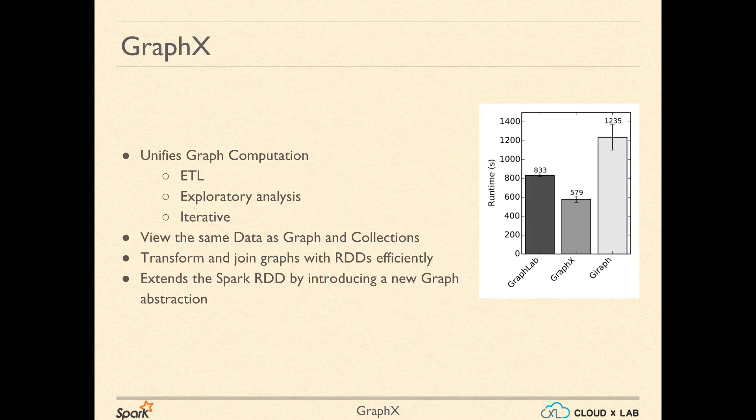The GraphX package of Spark unifies the ETL, extract, transform and load functionality of data into graph structure. GraphX also provides exploratory analysis. GraphX is faster than Giraph and slightly slower than the professional tool called GraphLab. GraphX makes it possible to view the same data as graph as well as collections. It can convert the RDD into graph and vice versa. GraphX can transform and join graphs with RDDs efficiently. GraphX at its core basically extends the Spark RDD by introducing a new graph abstraction.